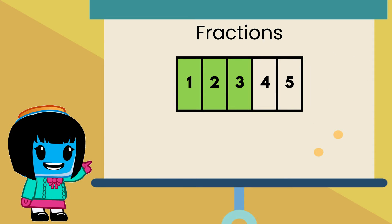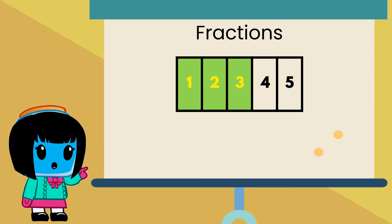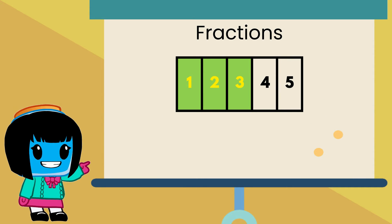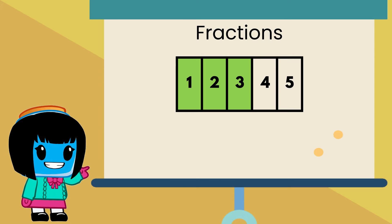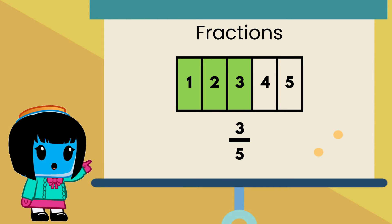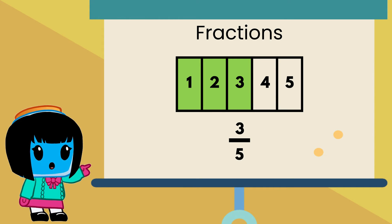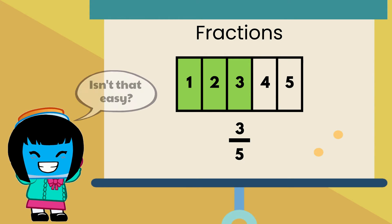For example, three out of five parts of this rectangle are shaded. So we can write the shaded part as three fifths. Isn't that easy?